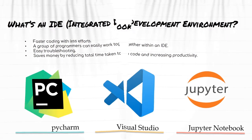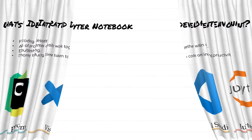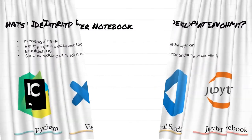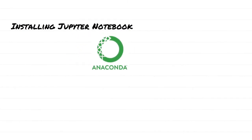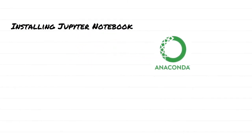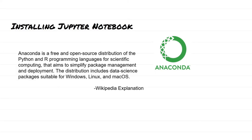In order to install Jupyter Notebook you can just install something called Anaconda software. Once you install Anaconda, it is also going to install Python for you. So really the only thing we need to install is Anaconda, and then we are ready to start coding with Python. If you want to read more about Anaconda you can just go to the Anaconda website.